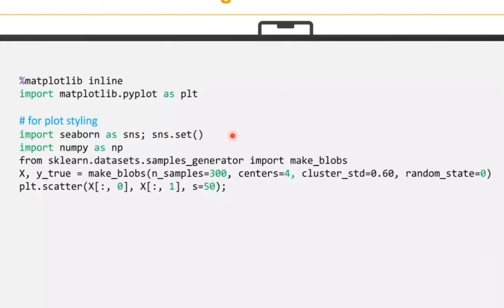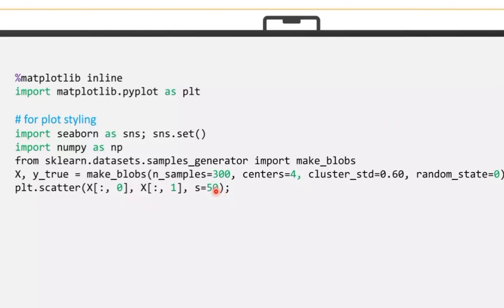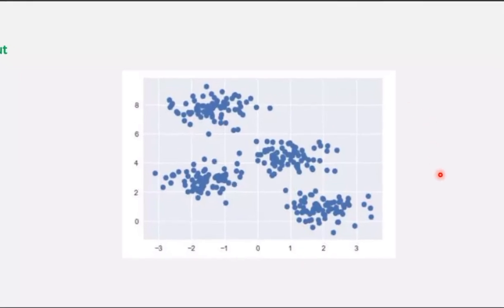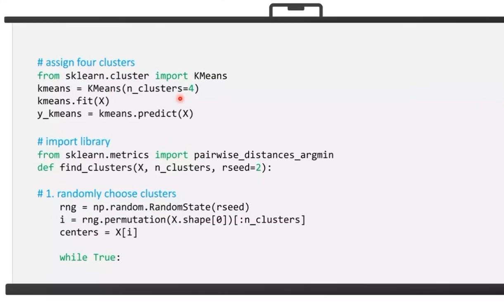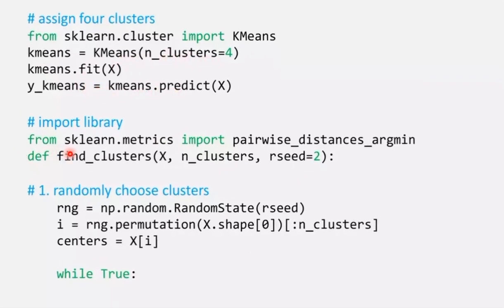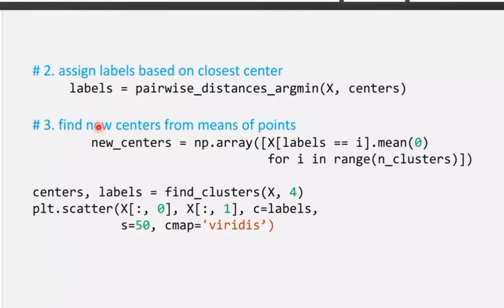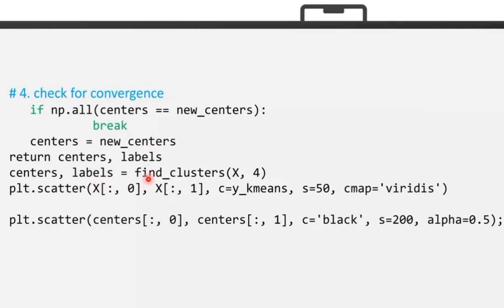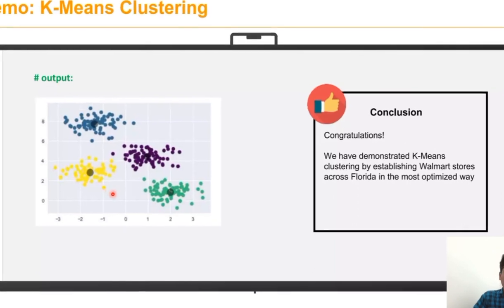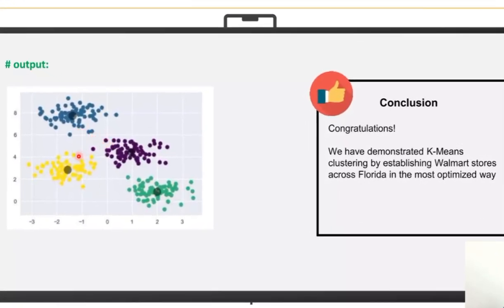Let's see how the implementation is done. We have to import seaborn for plot styling, then import numpy and take the number of samples, the centers and the cluster values. Then the random states are defined. We have to assign the cluster numbers, then predict with the help of k-means. Import all the necessary library from sklearn metrics. Find the clusters, take the random seed value. When the condition is true, we assign the label to find the centroid. Then we find the new centers from the mean of the points. After repositioning the centroid and when the centroid becomes static, we check for convergence. We can get the correct output by establishing the Walmart stores across the Florida region in the most optimal way.